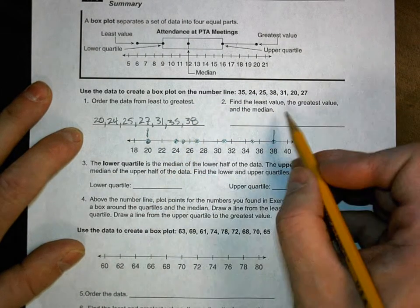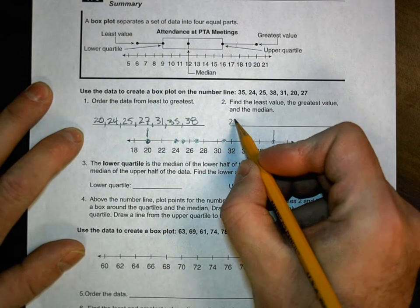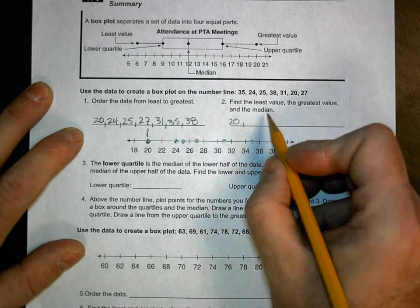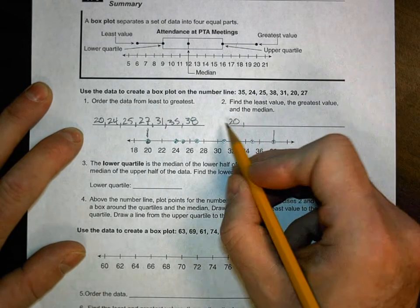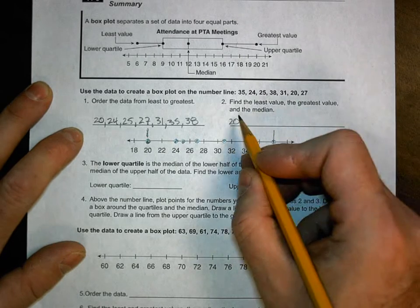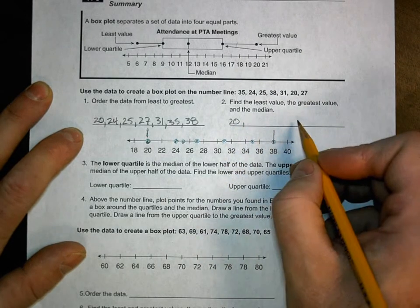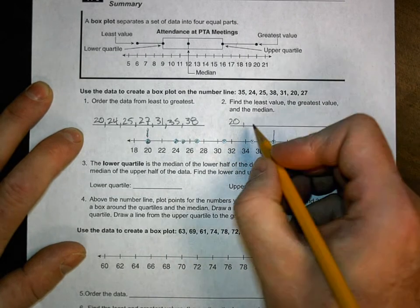So my least value is also here, right? So the least value is 20, the greatest value, and I'm putting them in comma order. So least value comma greatest value comma median. So if they gave it to me in this order, I'm going to list it in the same order. So my greatest value is 38.